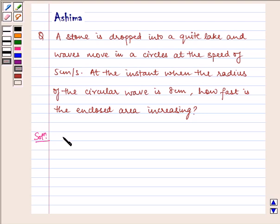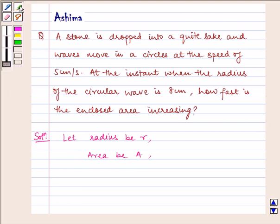Let radius of the circle be denoted by R and area be A. It is given to us that the stone is moving in a circle at the speed of 5 cm per second. That is, dr by dt is equal to 5.